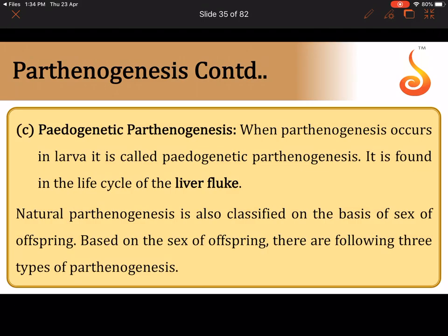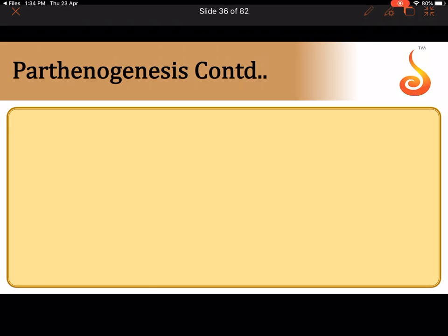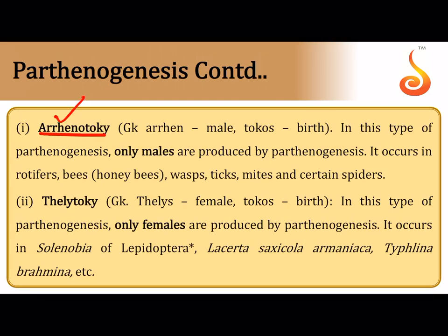Pedogenetic parthenogenesis is a peculiar phenomenon where the larva itself starts producing new larvae without becoming an adult first. The best example is the liver fluke, where the sporocyst larvae and redia larvae both reproduce parthenogenetically to produce the next larval stage. If parthenogenesis gives rise only to males it is called arrhenotoky; if only females it is called thelytoky, as in some butterflies, moths (Lepidoptera), and lizards like Lacerta and Typhlina bramina.